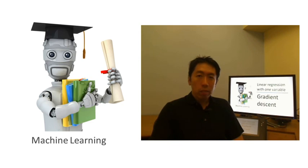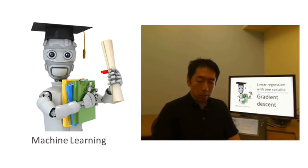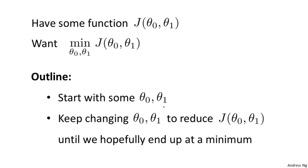In this video, I'm going to talk about gradient descent for minimizing some arbitrary function j. And then in later videos, we'll take this algorithm and apply it specifically to the cost function j that we had defined for linear regression. So here's the problem setup. We're going to assume that we have some function j of θ₀ and θ₁ — maybe it's a cost function from linear regression, or maybe it's some other function we want to minimize.